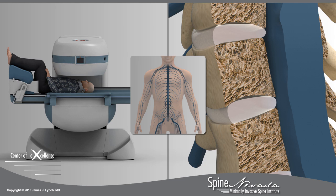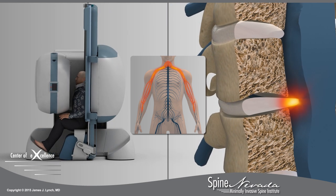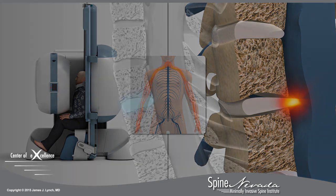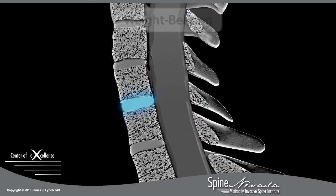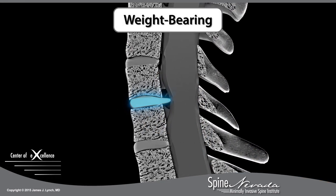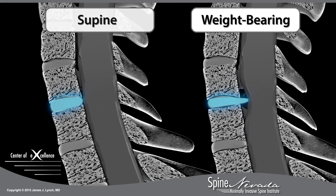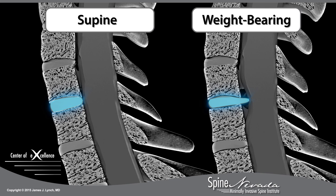While patients may experience relief while lying down, pain, numbness, or weakness typically increase as the patient moves into an upright or weight-bearing position. Diagnostic weight-bearing images can reveal pinched nerves or injured discs that explain a patient's symptoms, which may not be seen in traditional supine images. In fact, conventional supine MRIs can miss 30% of spinal injuries.